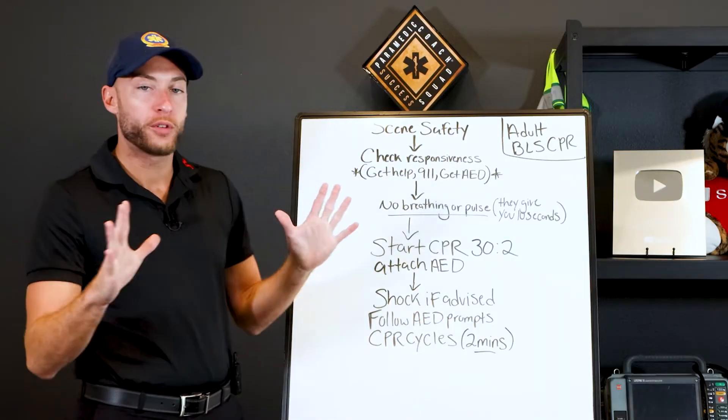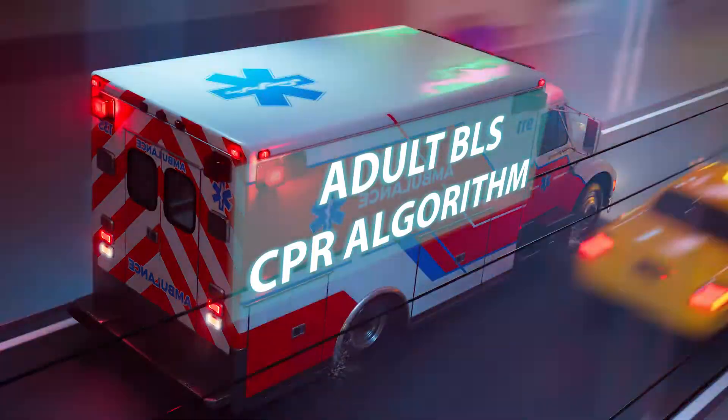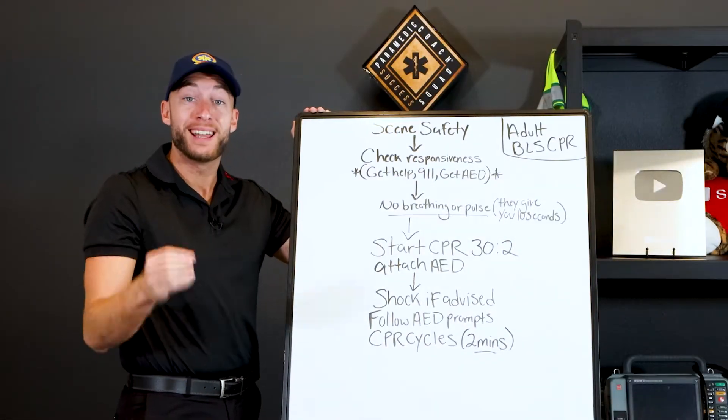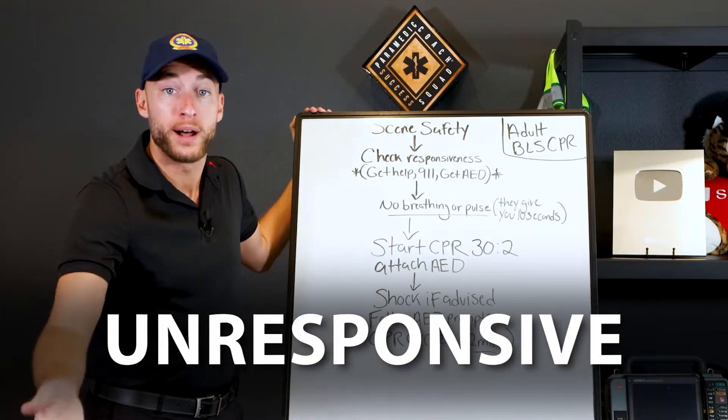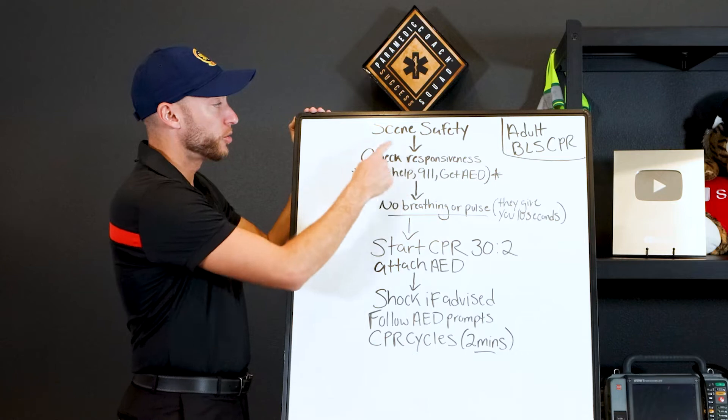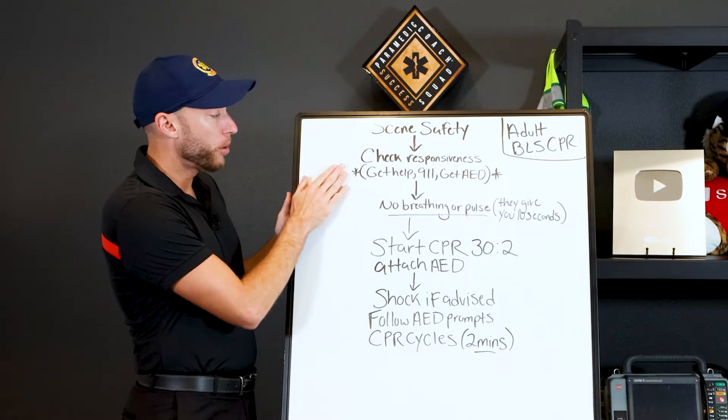Scene safety is always first, and remember we're talking about the adult BLS CPR algorithm. Meaning you go to somebody in cardiac arrest or you are called out to someone who is unresponsive. So scene safety is first. Scene has got to be safe. We do that. Now we actually approach the patient.